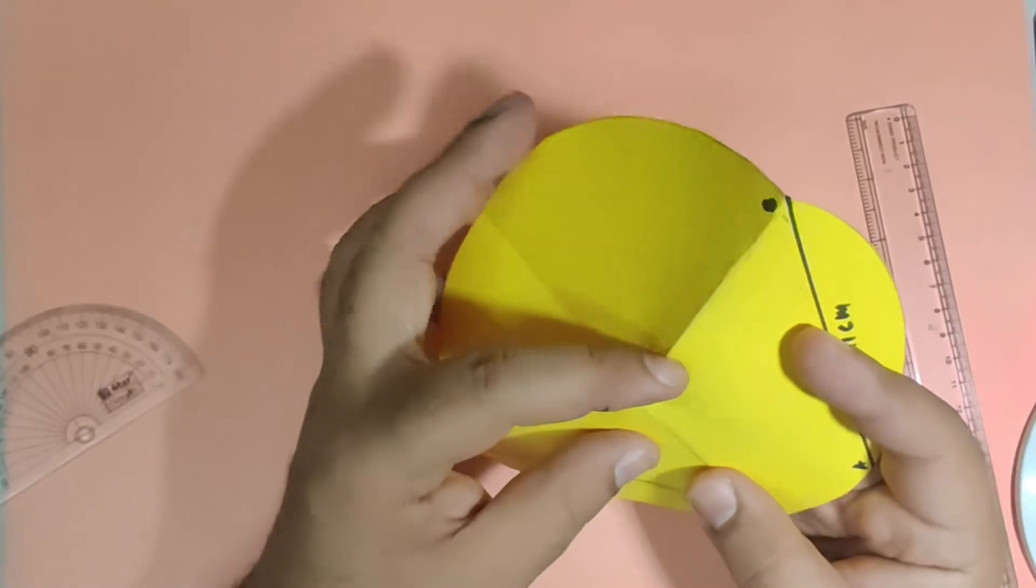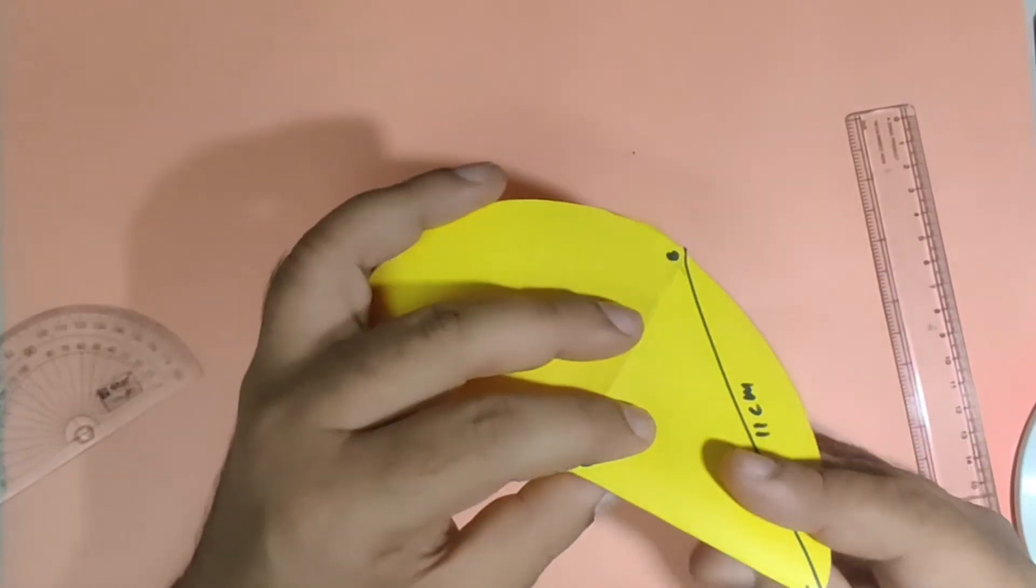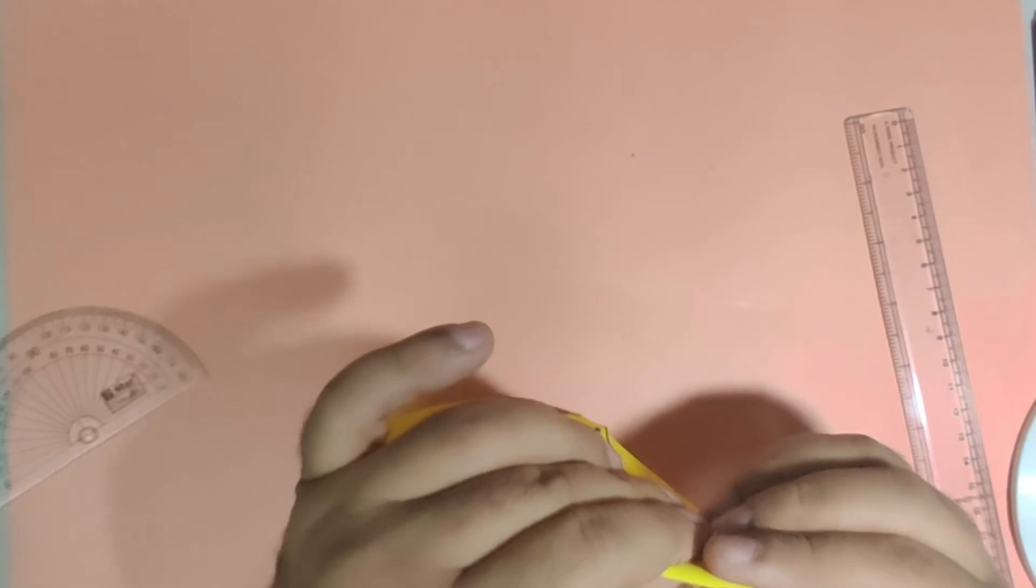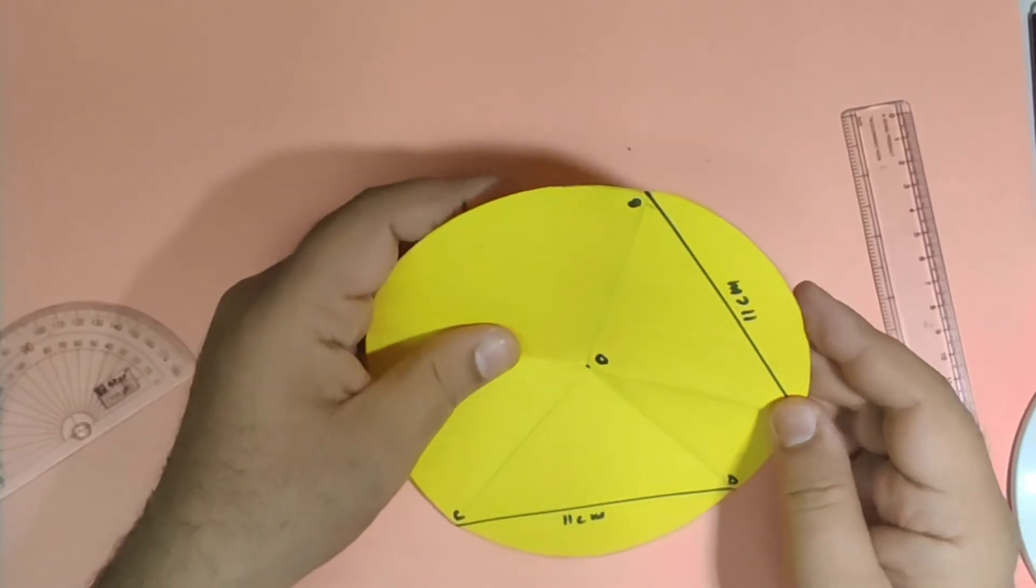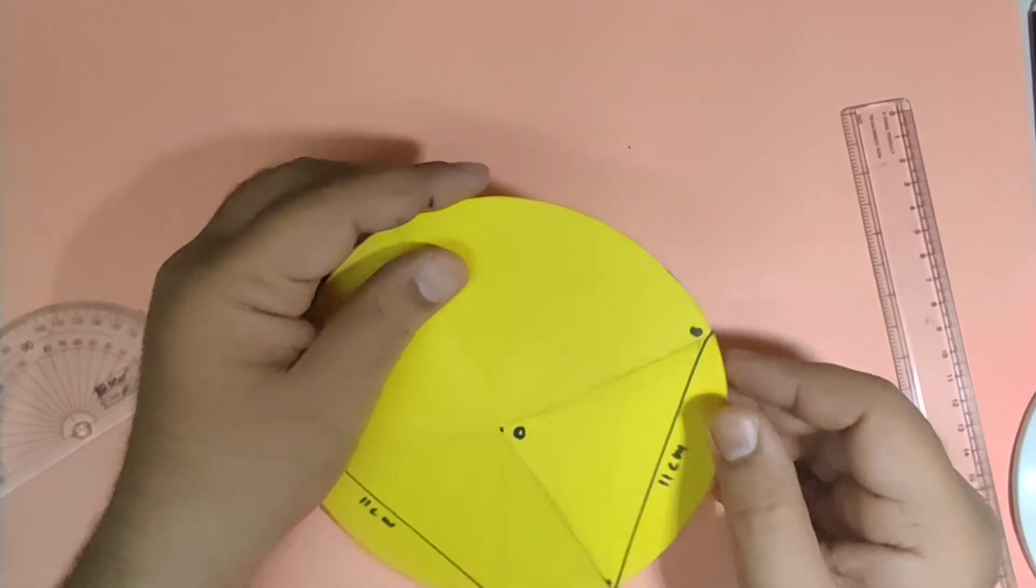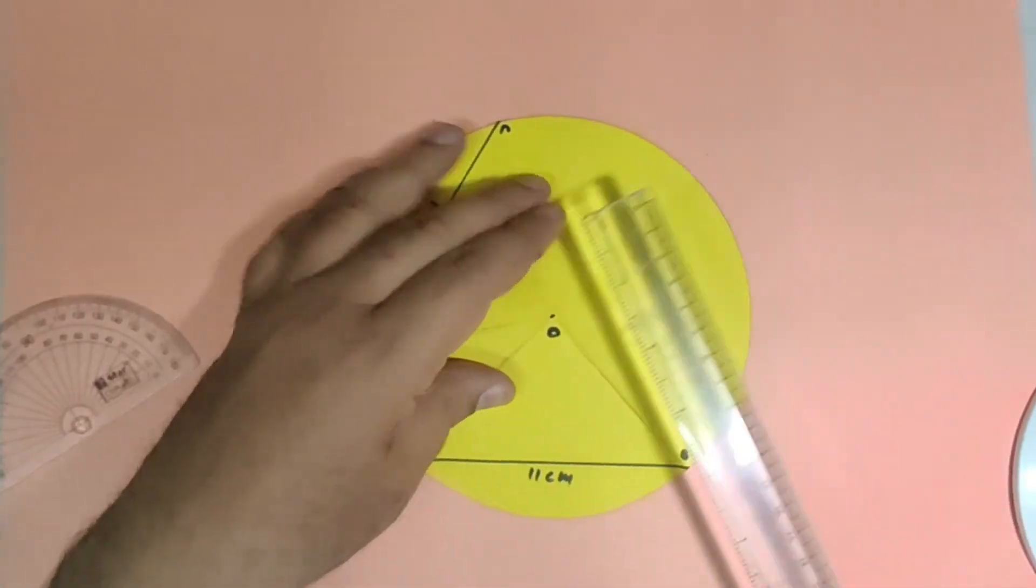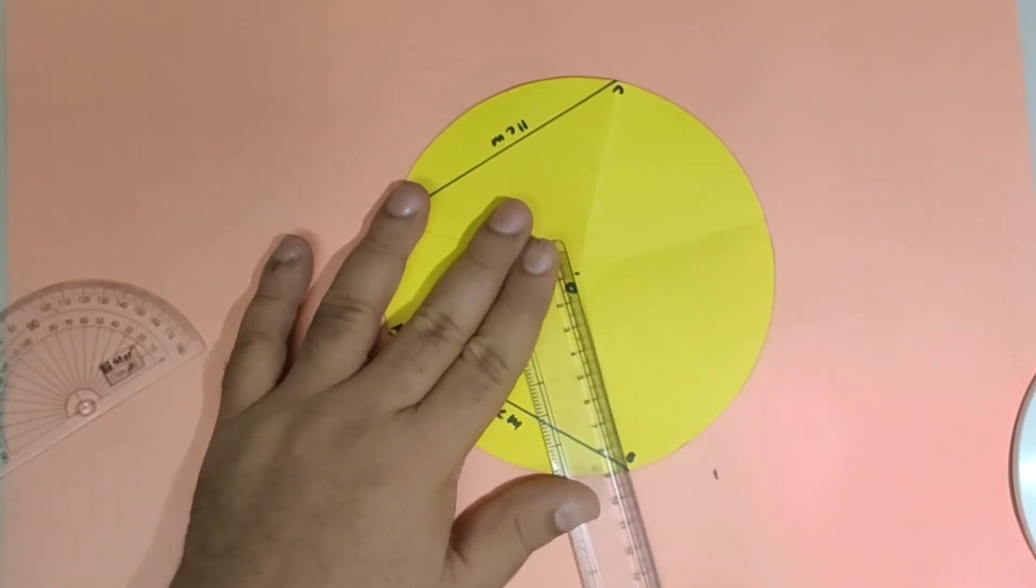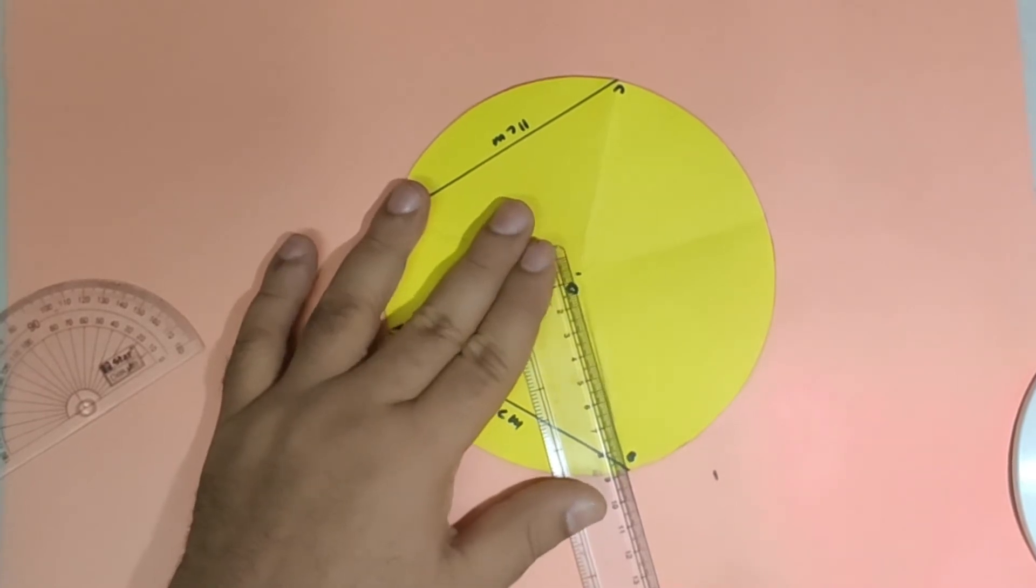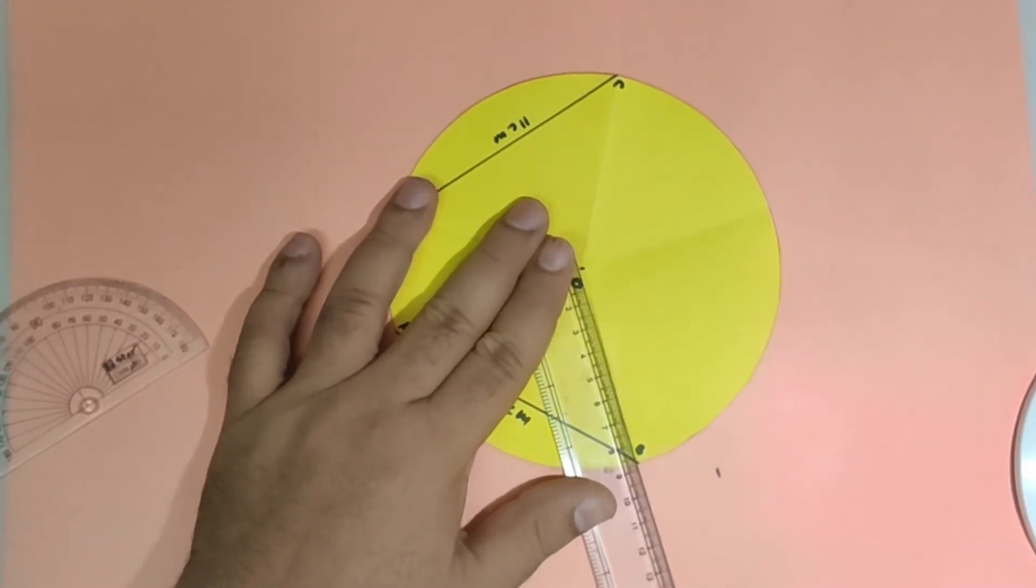Similarly I'll join A with O. Now I have got the angle subtended at the center by the two chords. Let me join these radii using the scale and sketch pen.